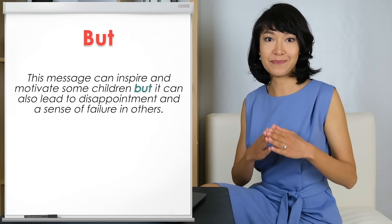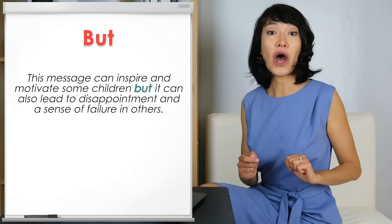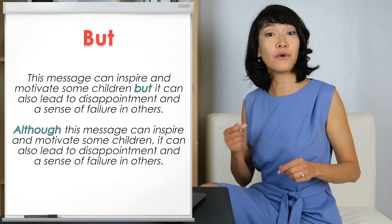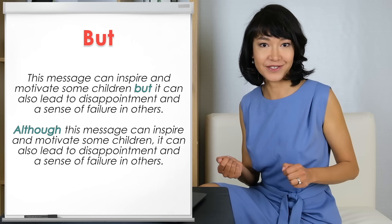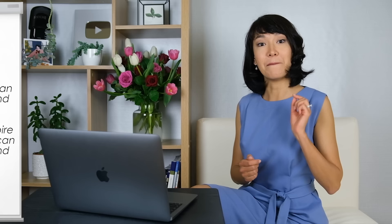Look at this example with BUT: 'This message can inspire and motivate some children, but it can also lead to disappointment and a sense of failure in others.' When we use ALTHOUGH, we usually put it at the beginning of the sentence: 'Although this message can inspire and motivate some children, it can also lead to disappointment and a sense of failure in others.' Pay special attention to that comma in the middle that separates the two contrasting parts of the sentence.